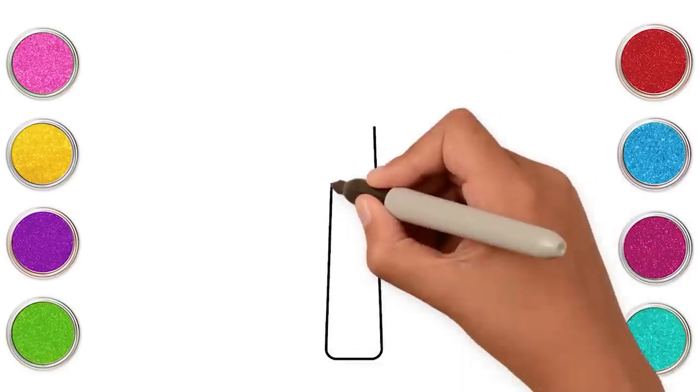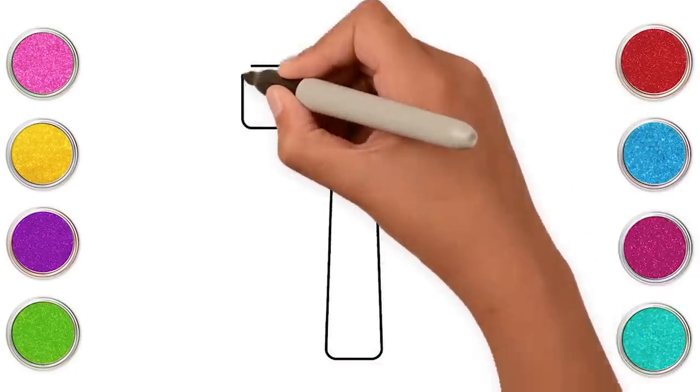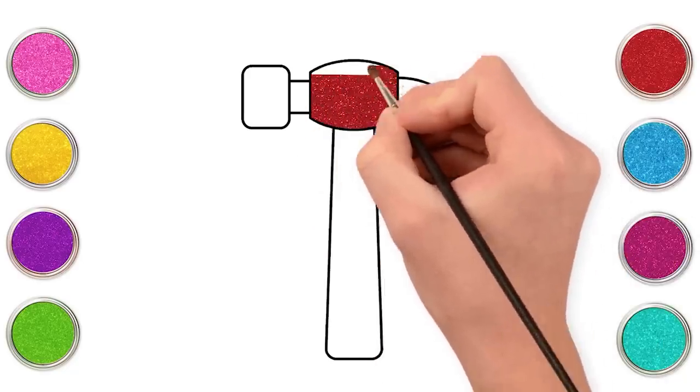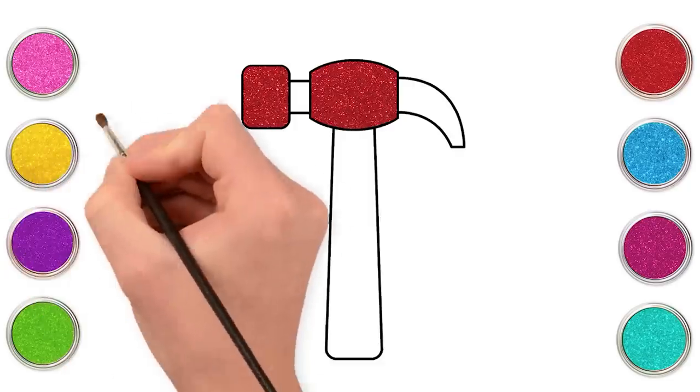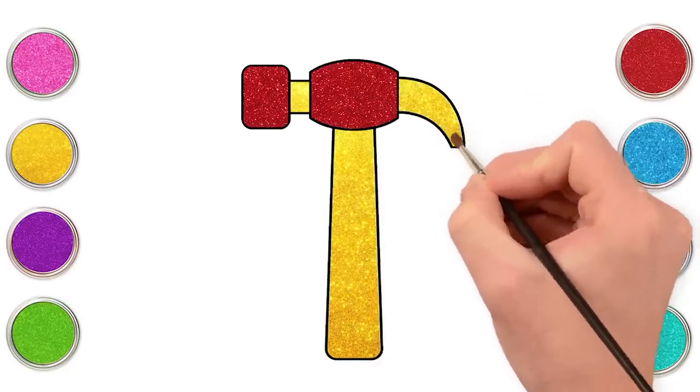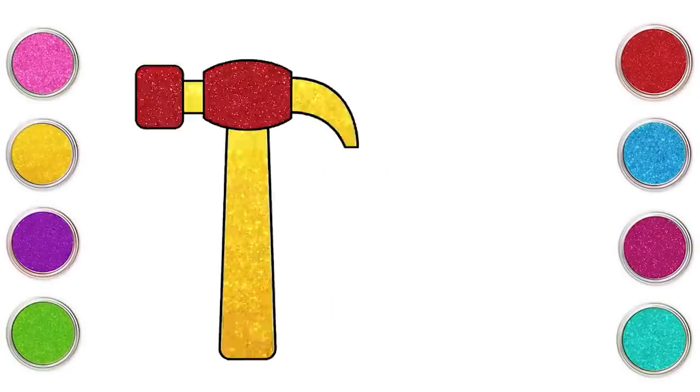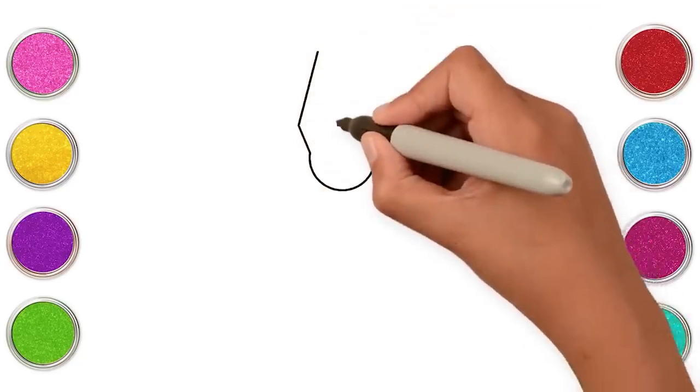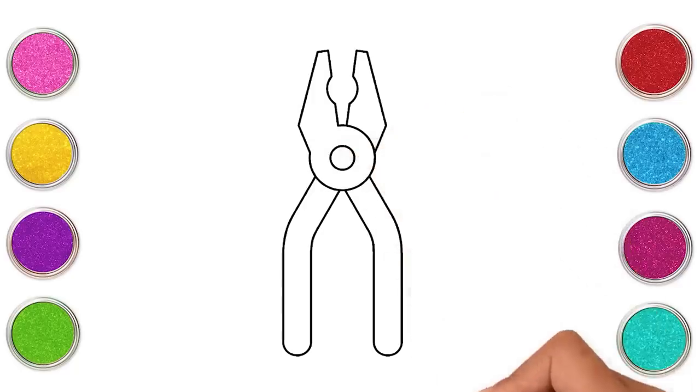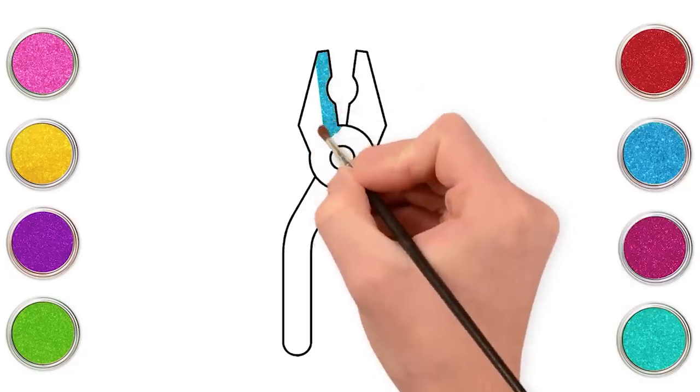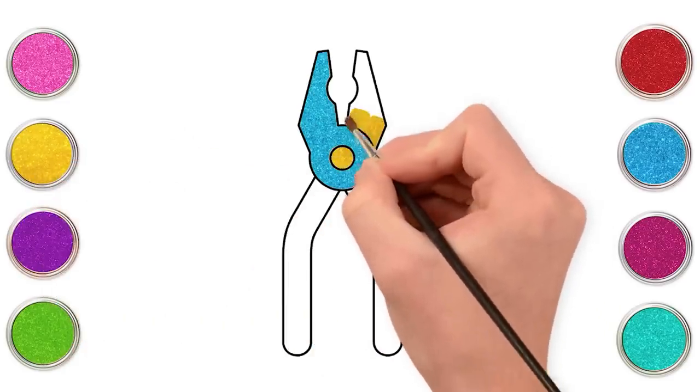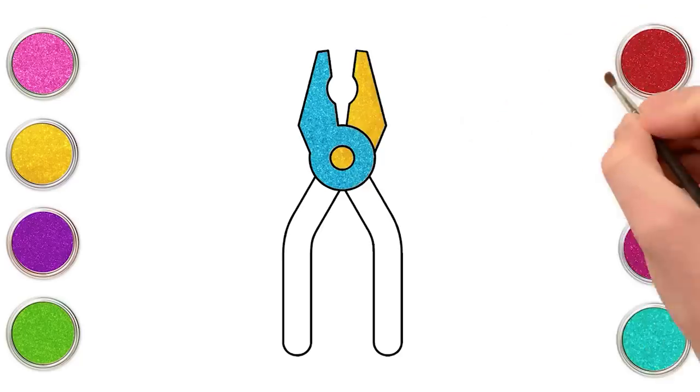Hello kids! Let's make construction tools today. Let's begin with making a hammer. That was easy, wasn't it? Now let's color it in. Let's use red and yellow to color the hammer. Now let's make pliers. Are you with me? Now let's paint them in. Let's use blue, yellow, and red.